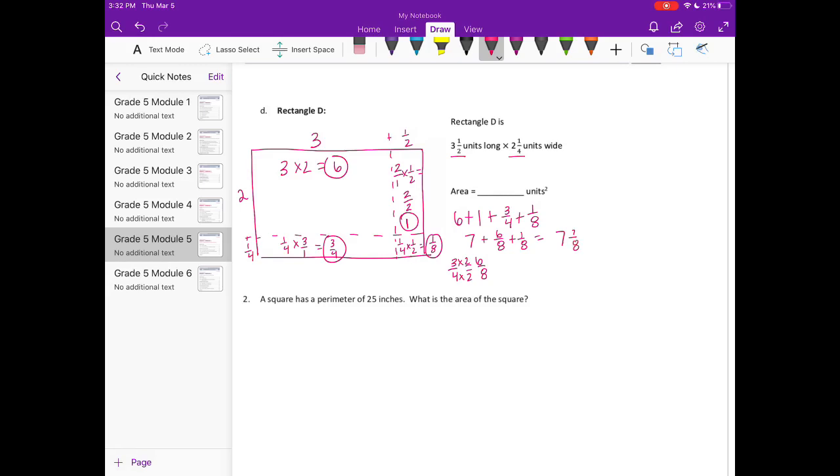Verifying: 3 and 1 half times 2 and 1 fourth. 3 times 2 is 6 plus 1 is 7 halves times 9 fourths. 7 times 9 is 63, 2 times 4 is 8, so 63 eighths. 8 times 7 is 56, so 8 goes into 63 seven times with 7 left over. We get 7 and 7 eighths units squared.